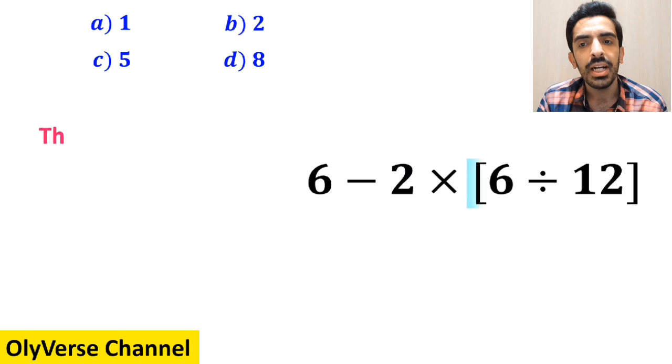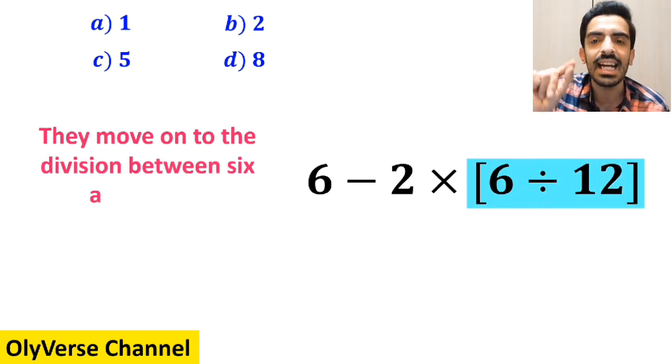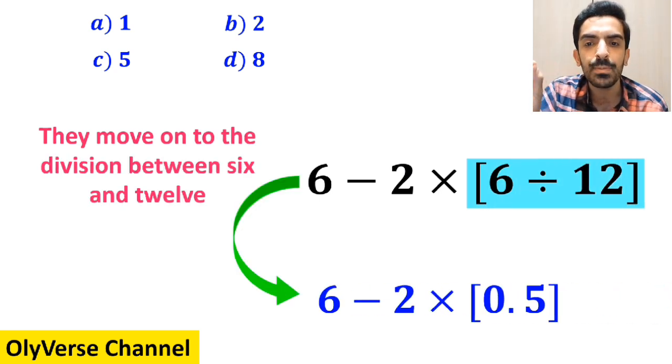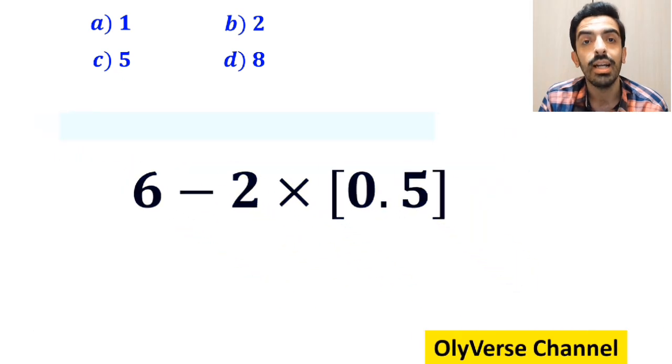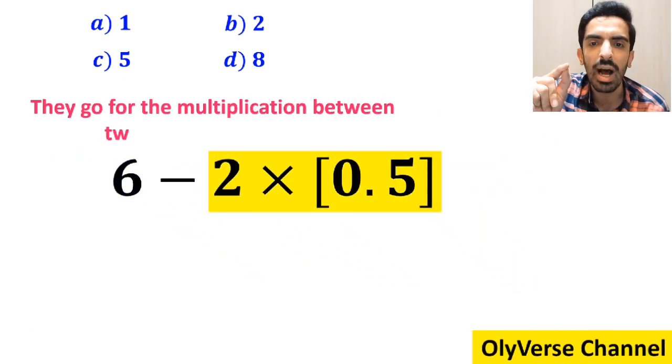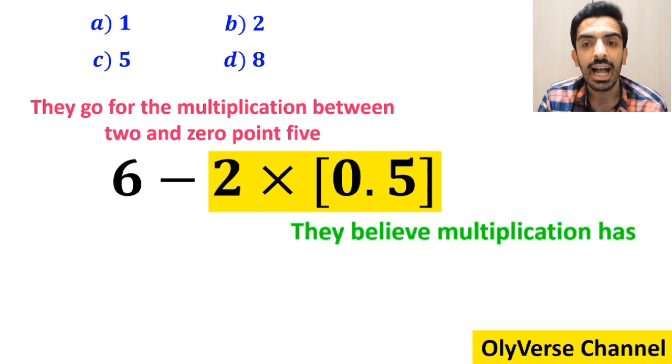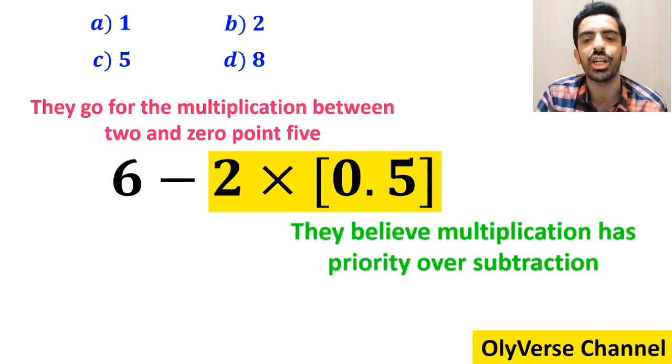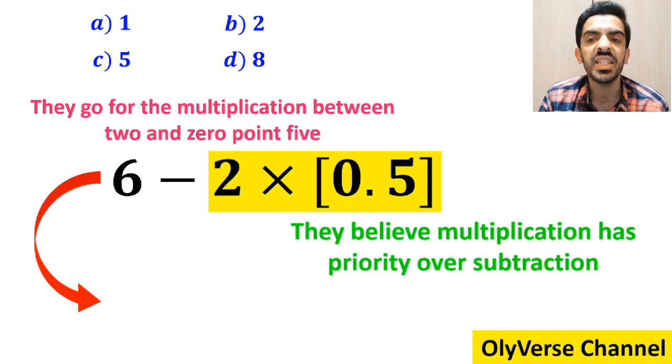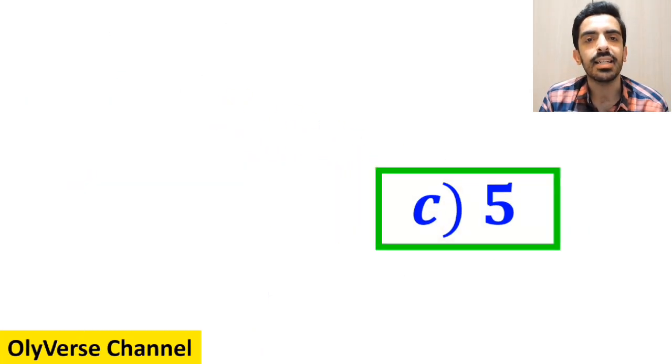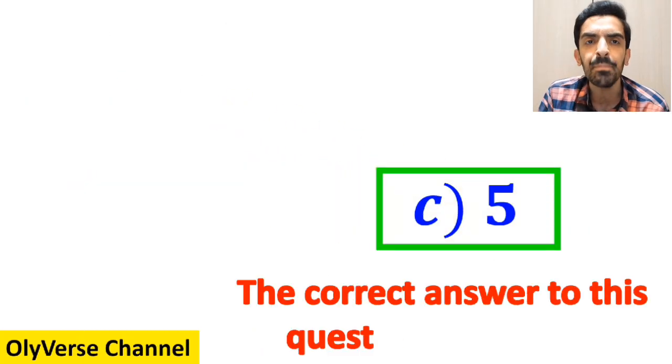And the next step, they move on to the division between 6 and 12, which simplifies this expression to 6 minus 2 times 0.5. Then they go for the multiplication between 2 and 0.5, because they believe multiplication has priority over subtraction. So instead of this expression, they write 6 minus 1, which finally gives them the answer 5. And immediately, they say that the correct answer to this question is option C.